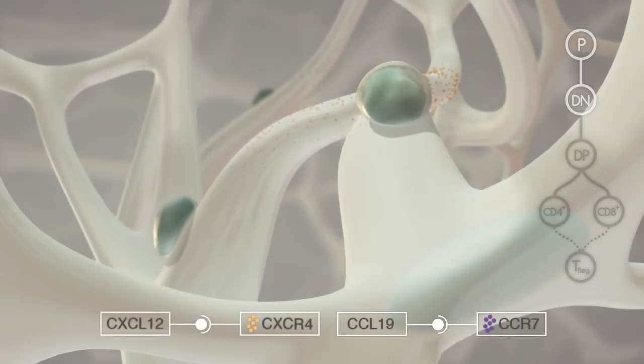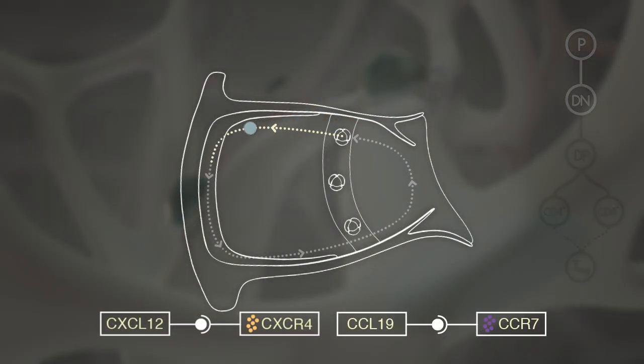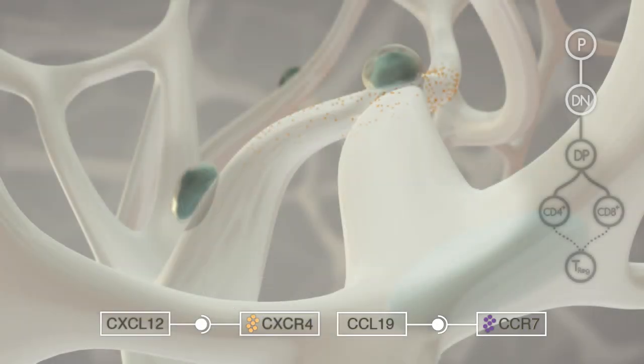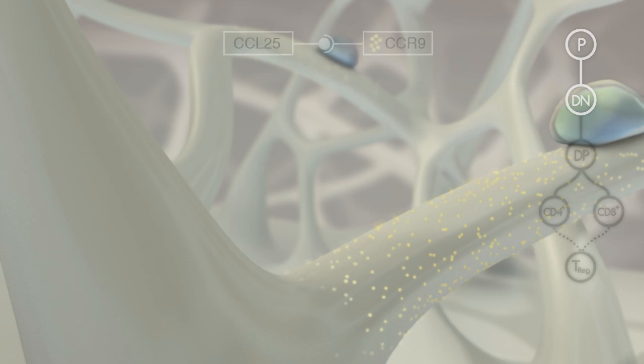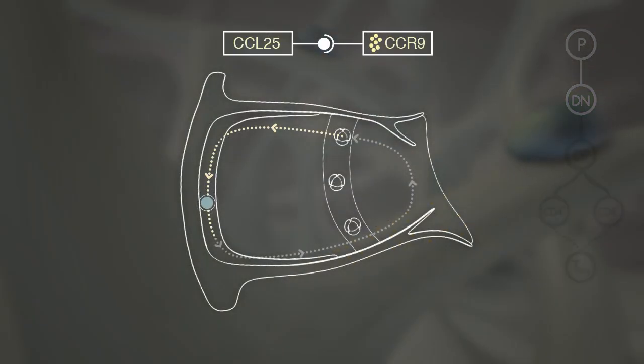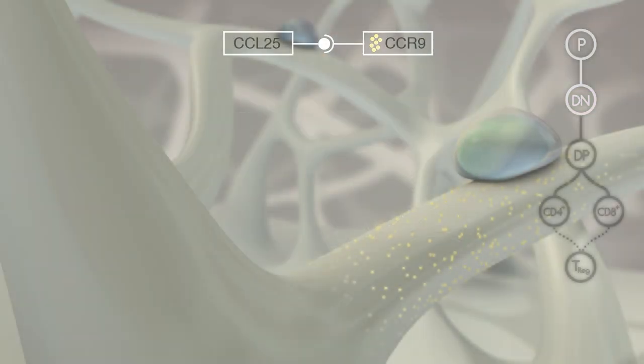They migrate to the outer region of the cortex, regulated by chemokine signals through CXCR4 and CCR7. Further outward migration is mediated by CCR9 signals.